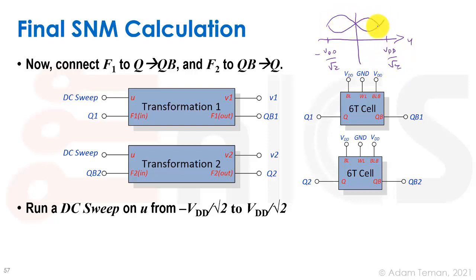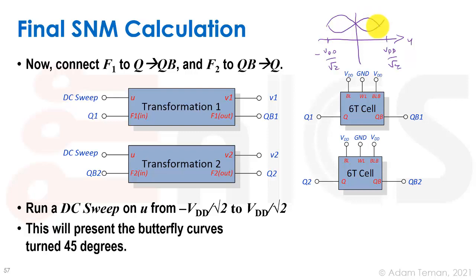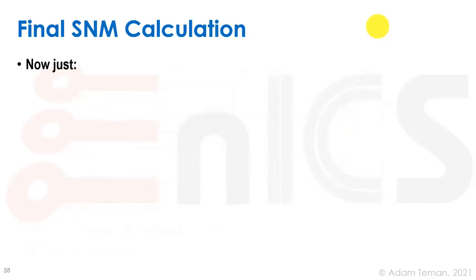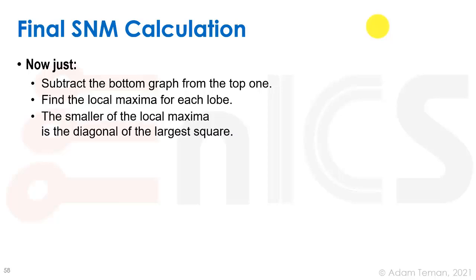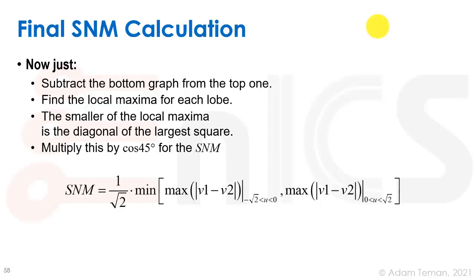We subtract the bottom graph from the top, find the local maxima from each lobe (using absolute value), and the smaller of the two local maxima is the diagonal of the largest square. Multiplying by cosine 45 degrees gives us the SNM. The final formula is: SNM = (1/√2) × min( max|v1−v2| for u ∈ [−VDD/√2, 0], max|v1−v2| for u ∈ [0, VDD/√2] ) — that's the left and right sides of the separatrix.